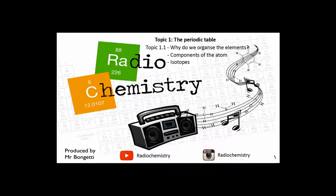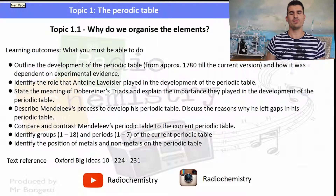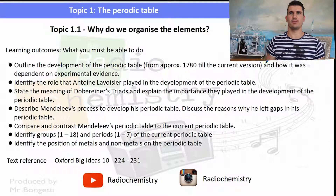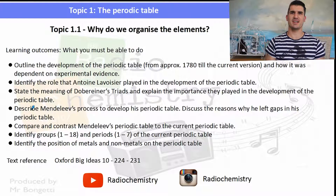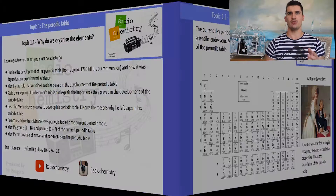Let's get straight into it. This is topic 1.1, why do we organize the elements? We have an introductory look at the periodic table. The learning outcomes are the things that you must be able to do after watching the video. You need to outline the development of the periodic table, know what role Antoine Lavoisier and Döbereiner played in its formation, know a little bit about Mendeleev, and compare and contrast his periodic table to the current one. If you need more information, check out the text on page 224.